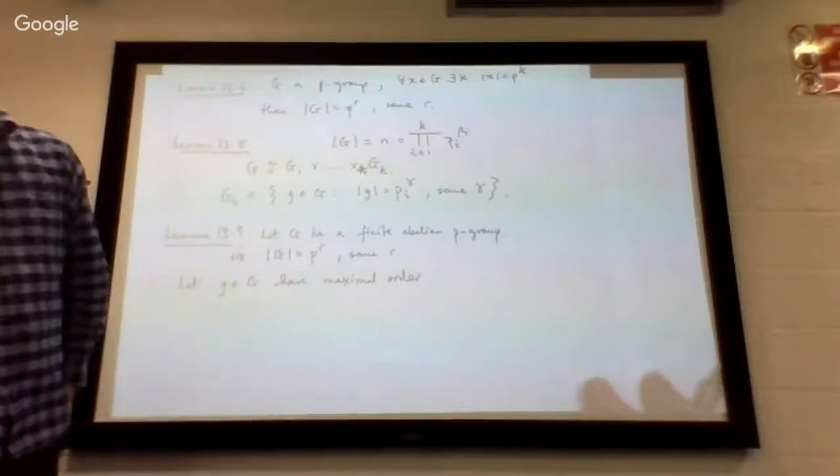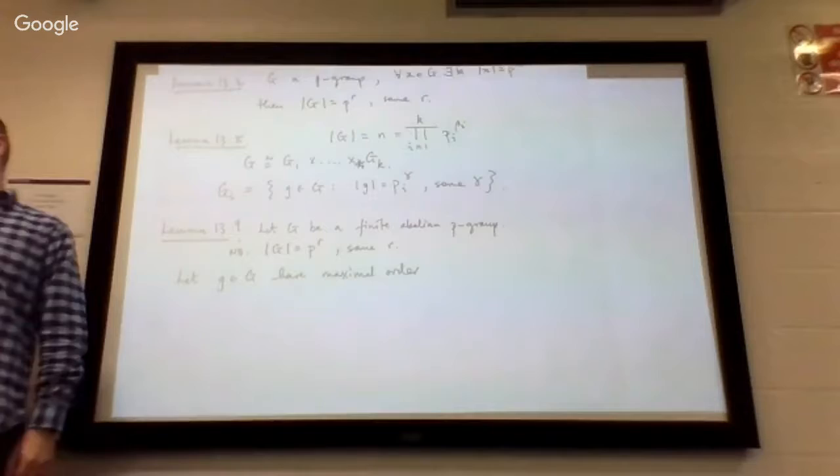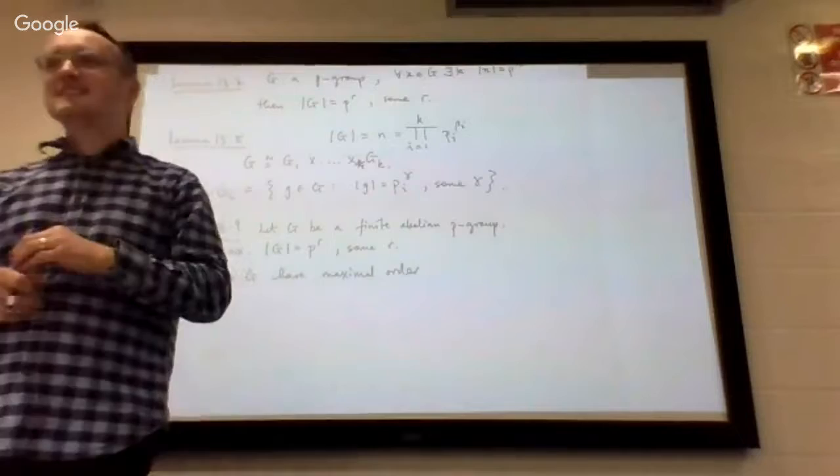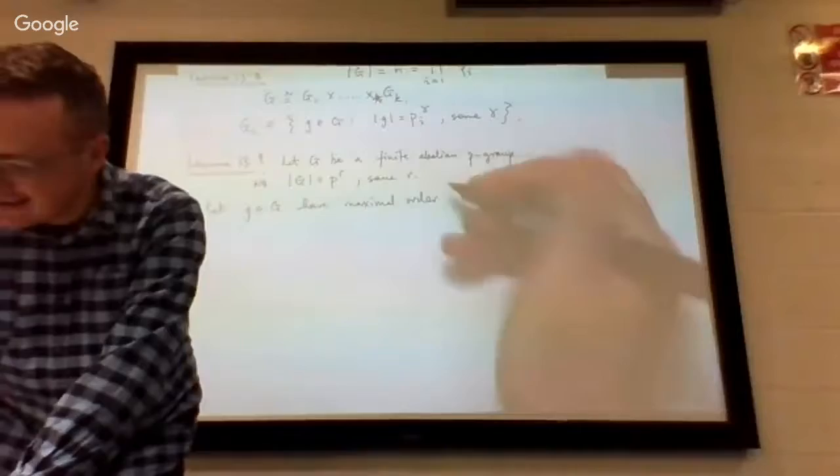If you say you're of maximum intelligence in the class, it means you're brighter than everyone else. But if you say you're of maximal intelligence, it implies there's no larger intelligence than you, but it's not a strict standard — there could be others of equal IQ. So let g have maximal order.